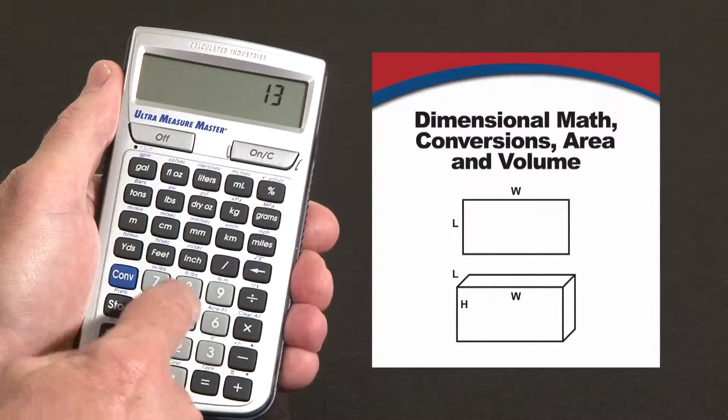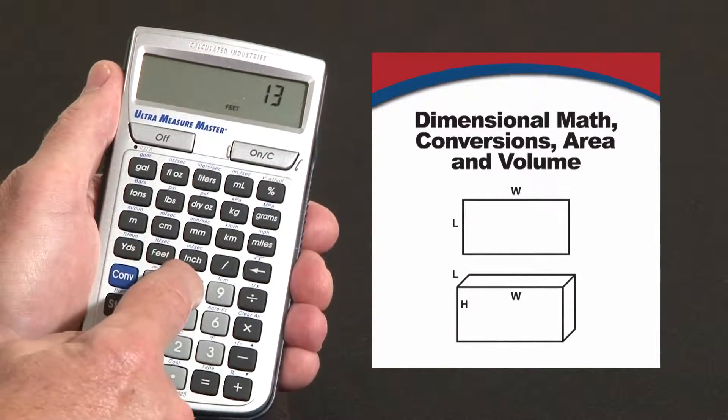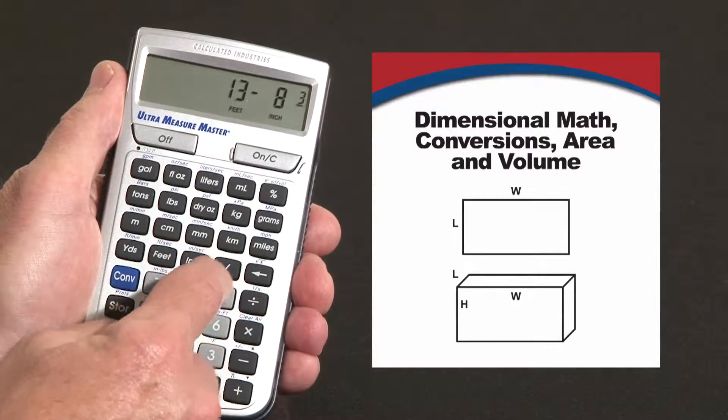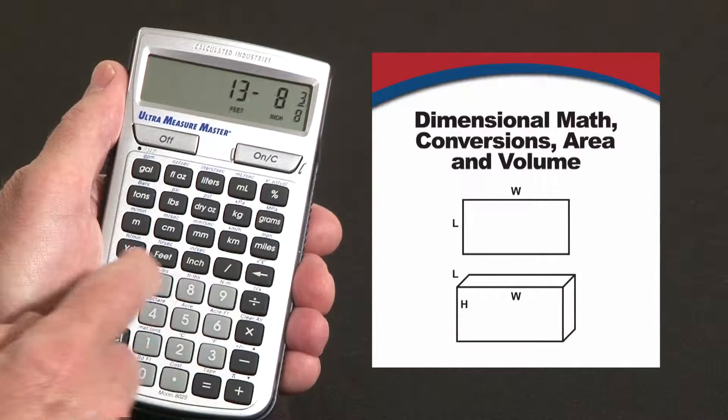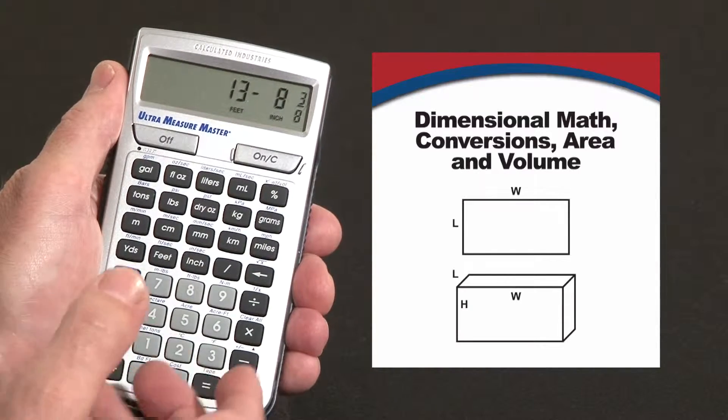For instance, 13 feet, you just label it 8 inches and 3/8ths. You can do fractions all the way down to 64ths of an inch just the way you write them, but you're not required to stay in that format.